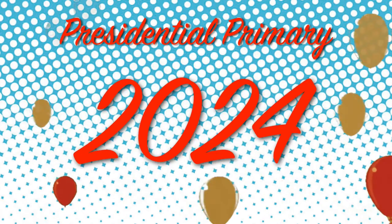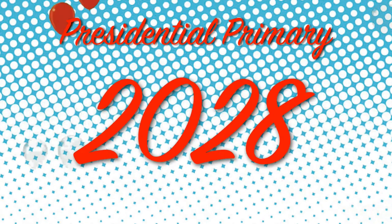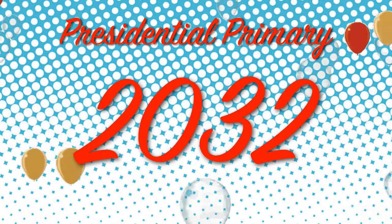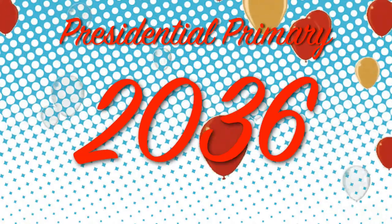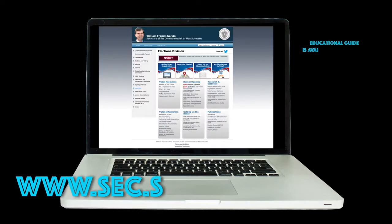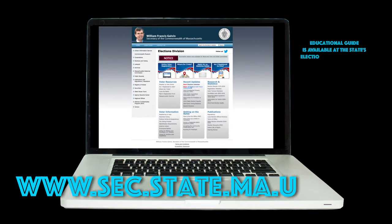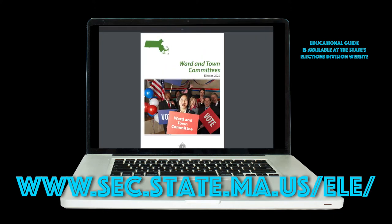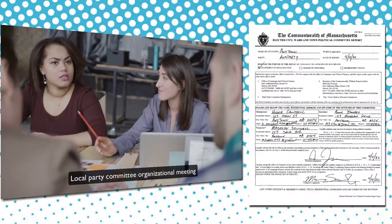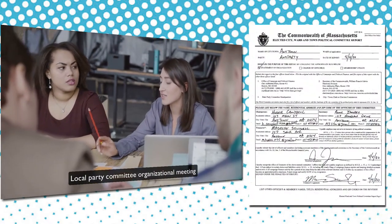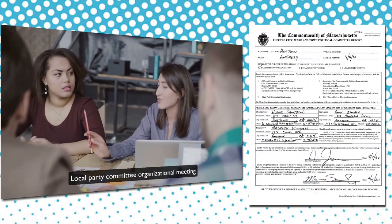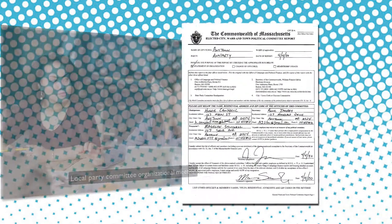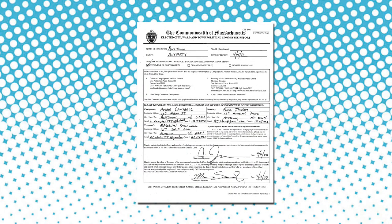Local party committees organize every four years during the presidential primary. Detailed information about how to organize a party committee is available online at the state's elections division. After determining the members of the local party committee, the committee can complete an organizational statement provided by OCPF.